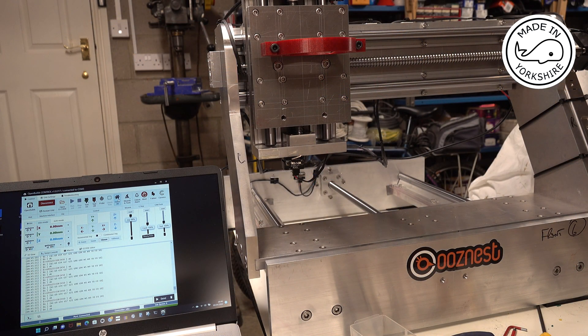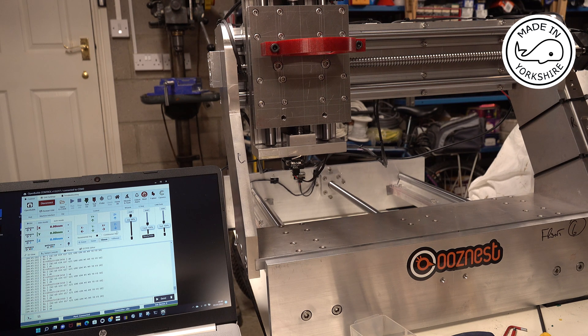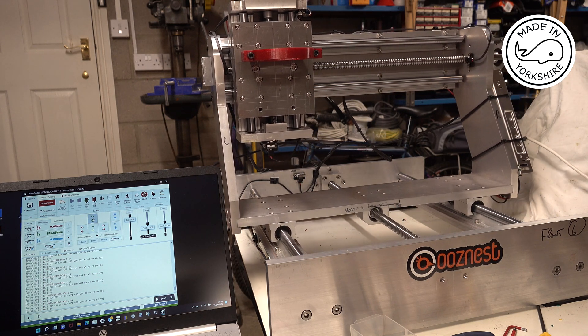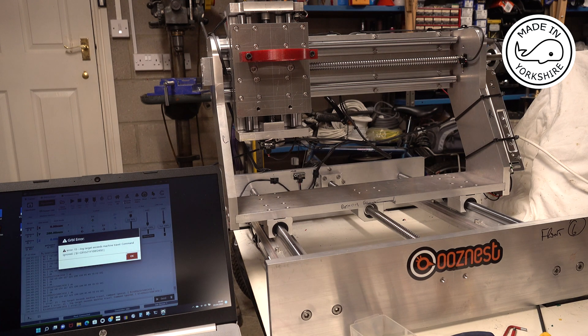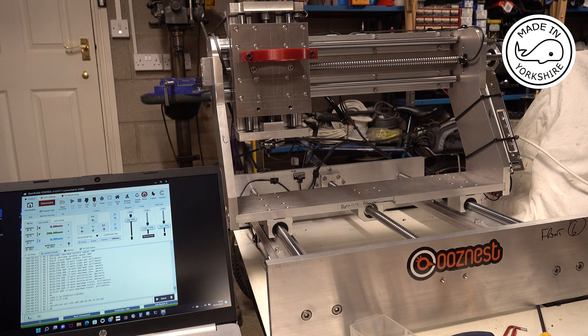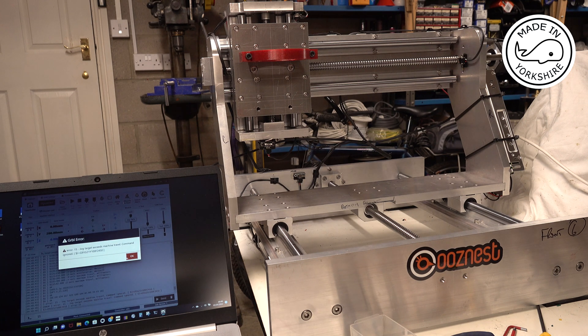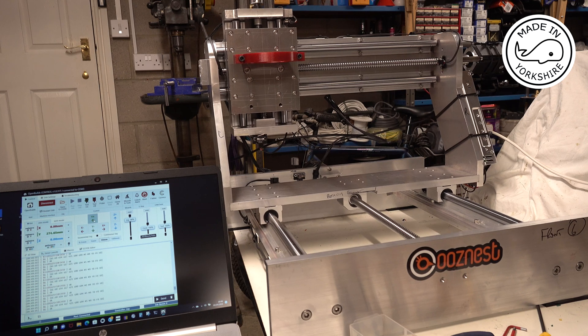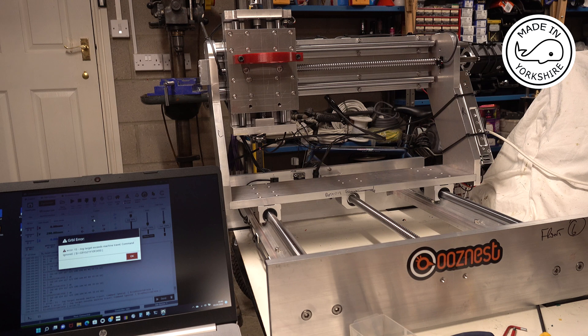And also if I try and exceed the soft limits the alarm should kick in. So if I set the travel to be 100mm and I move the Y axis back. Oh it's just kicked in there. I don't know why it's done that. Oh maybe because it's 300mm. So if I set it to 10mm I'll be able to get a bit closer. So I've got it to 280, 290, 300 it kicks in.